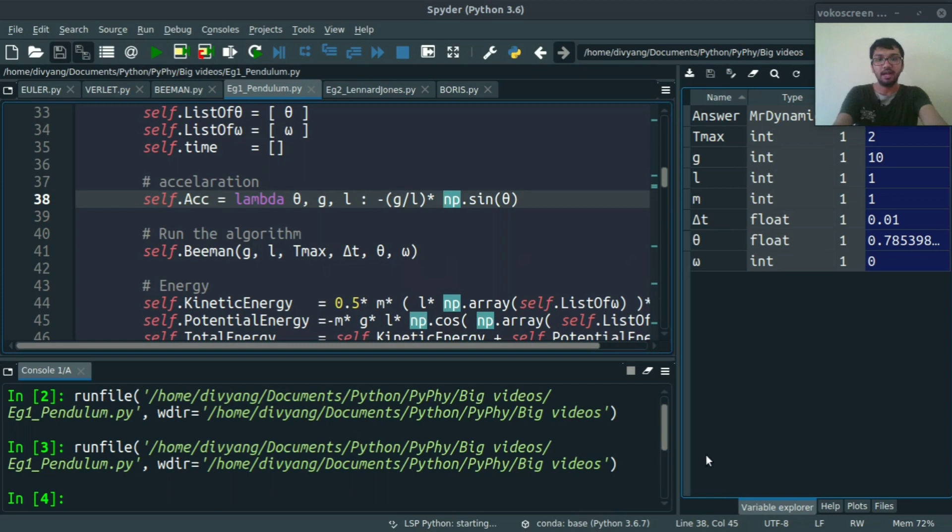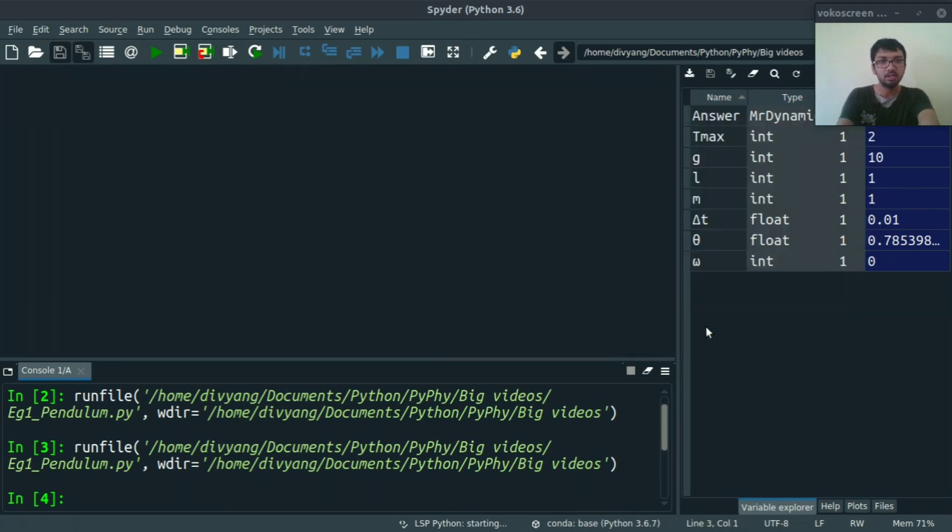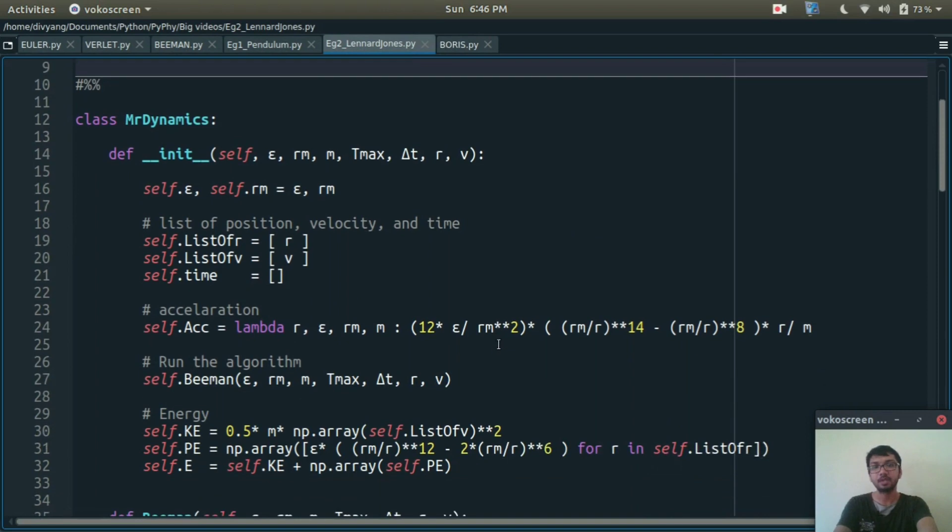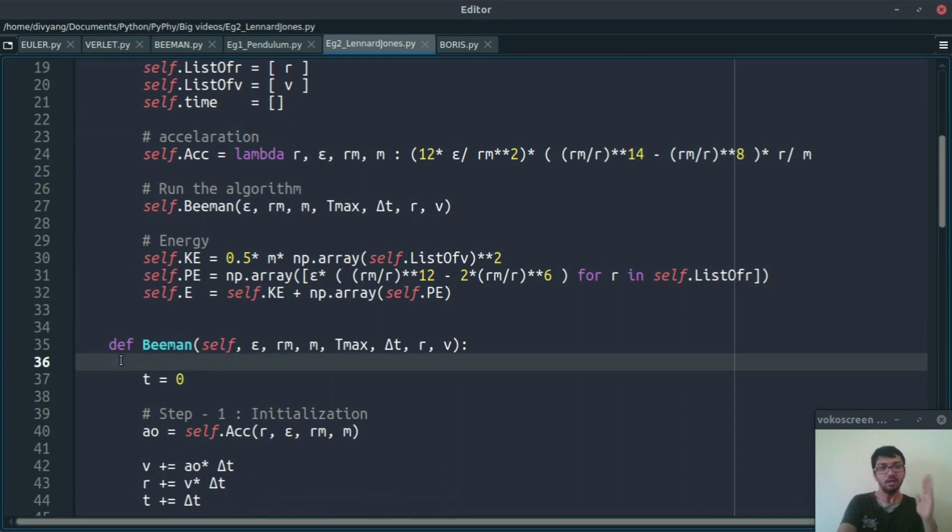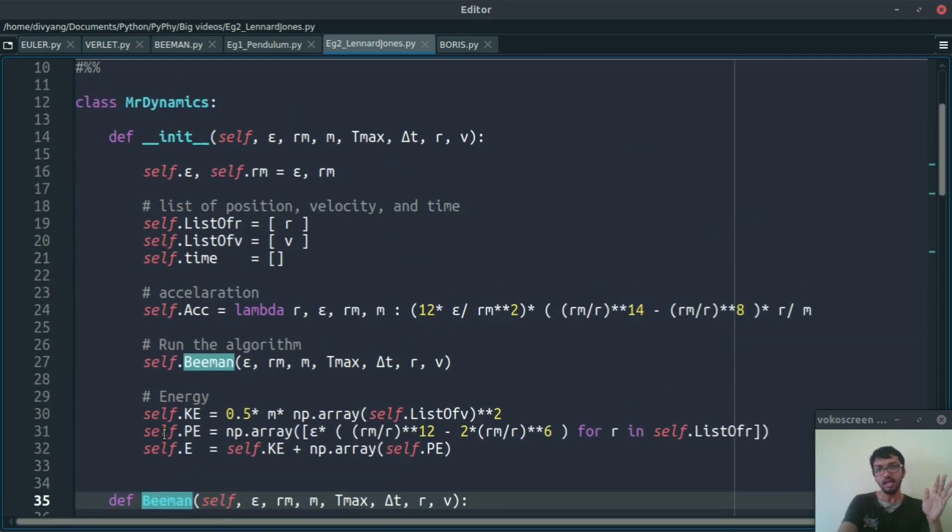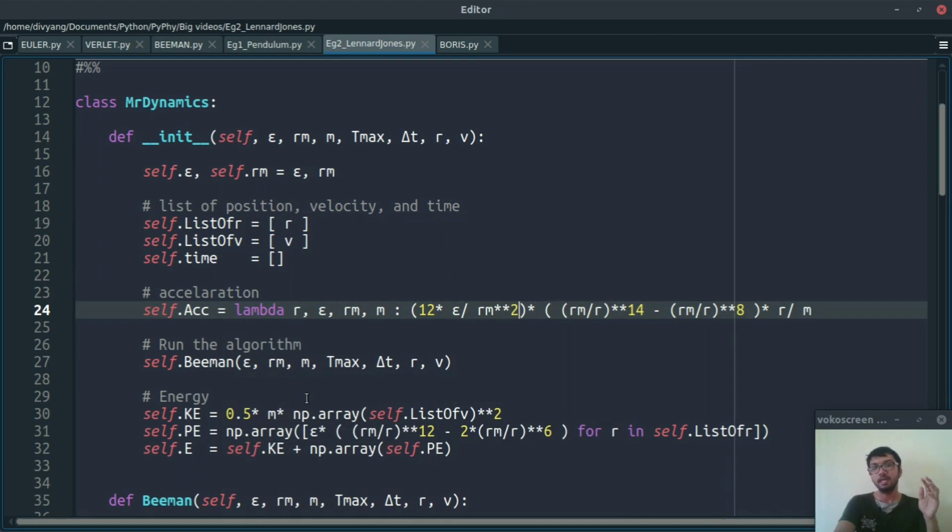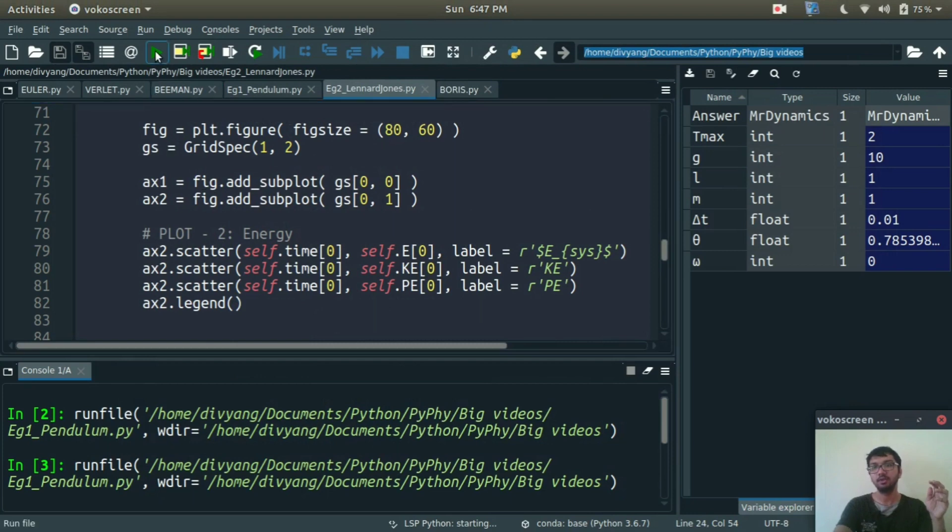So let's jump again to the code. This is the second example. Let's maximize this screen. Again the entire code is the same: initialization part, heart of MD dynamics, Beeman's algorithm, and plotting part. Here the acceleration term is from this force. Let's run this thing now and see what we are getting.